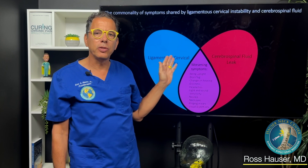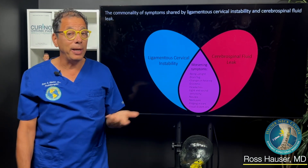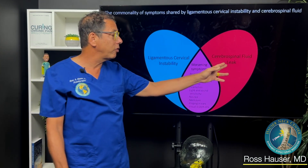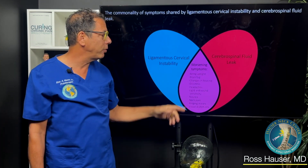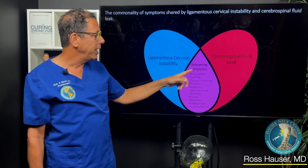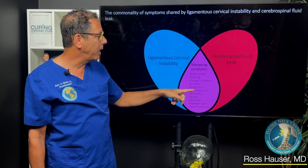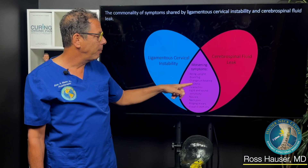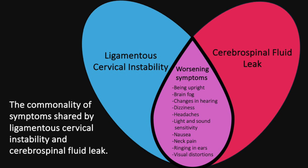Ligamentous cervical instability has many of the same symptoms as a cerebral spinal fluid leak: worse with being upright, brain fog, changes of hearing, visual distortion, light and sound sensitivity, nausea, neck pain, ringing of the ears, bloating, headaches — the whole gamut.